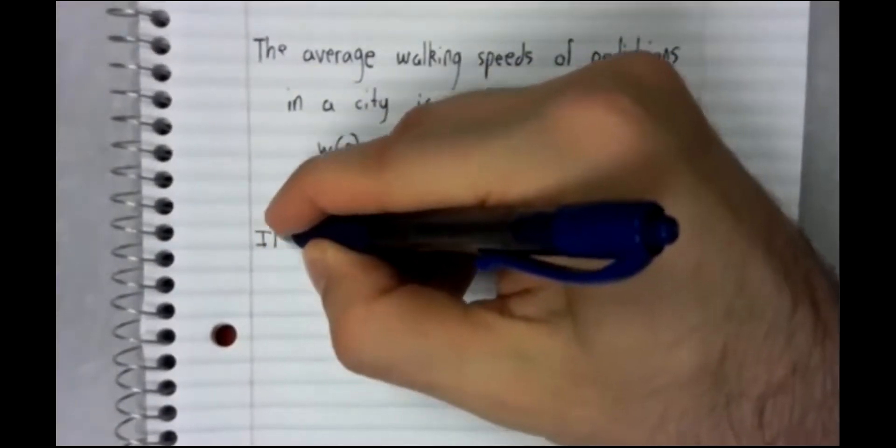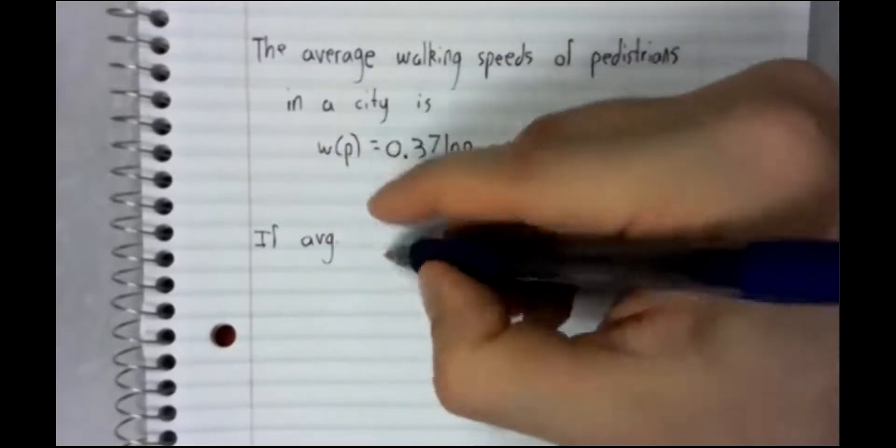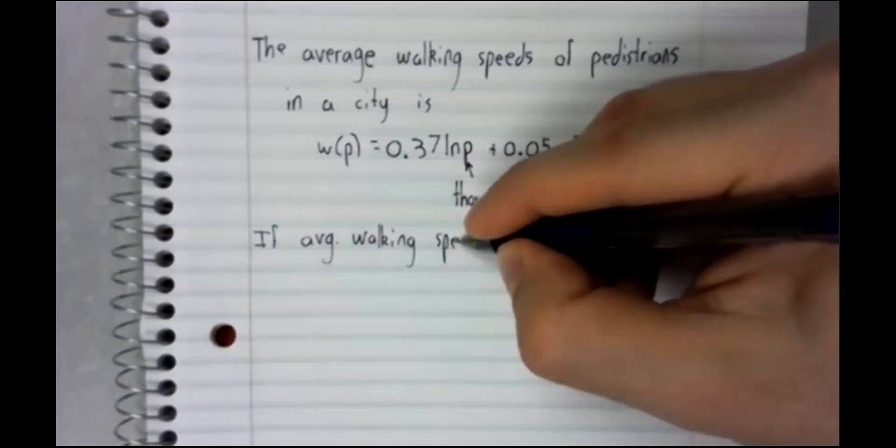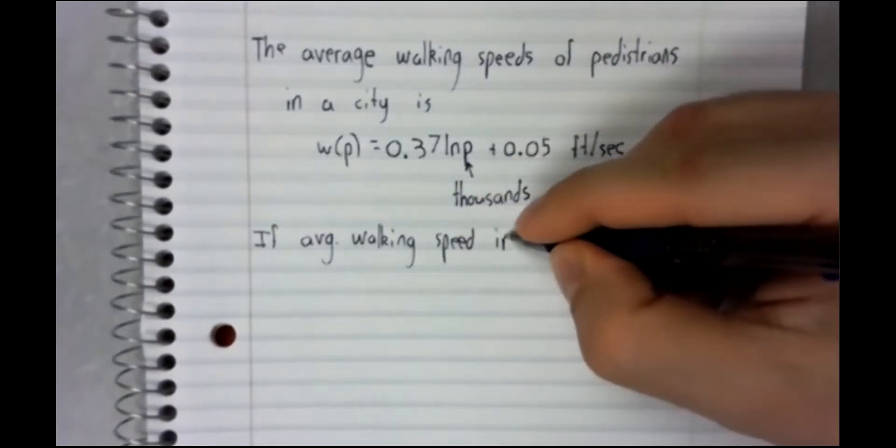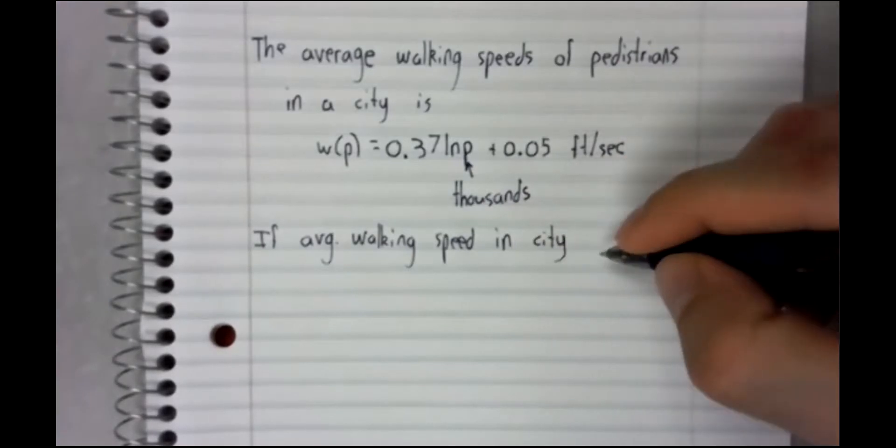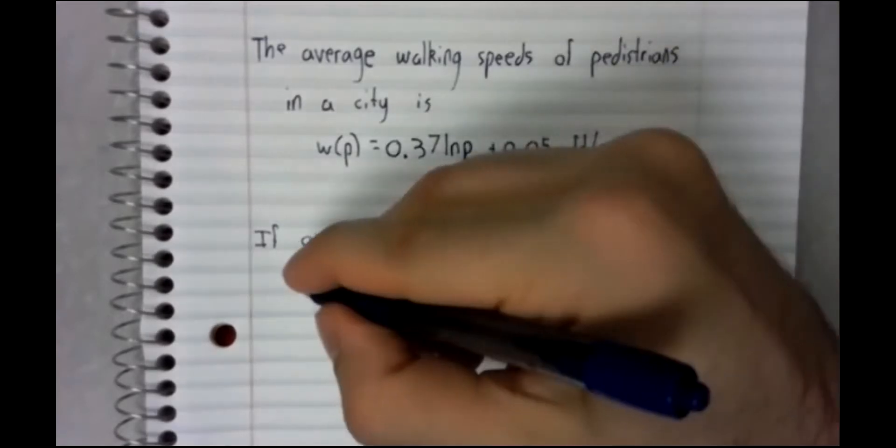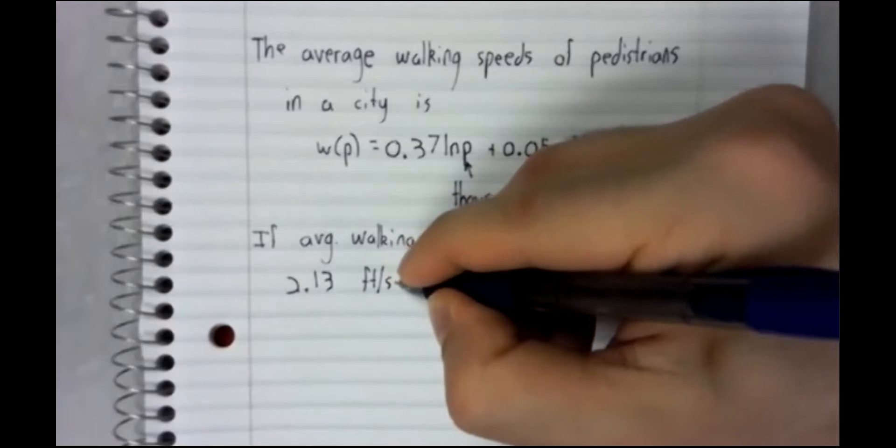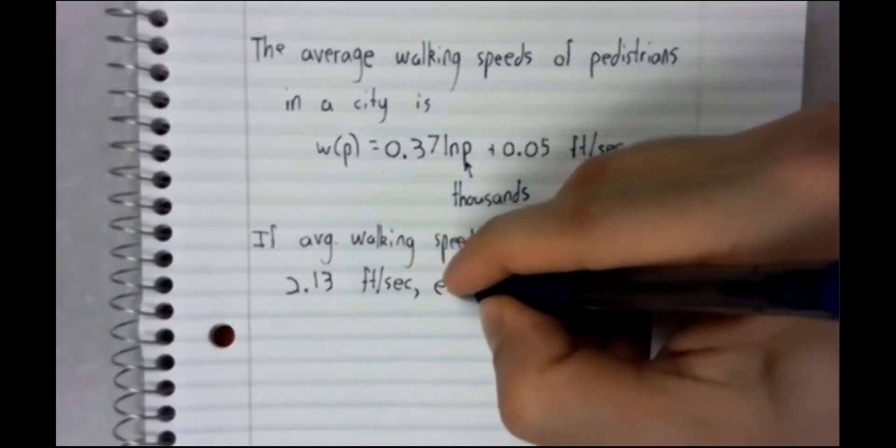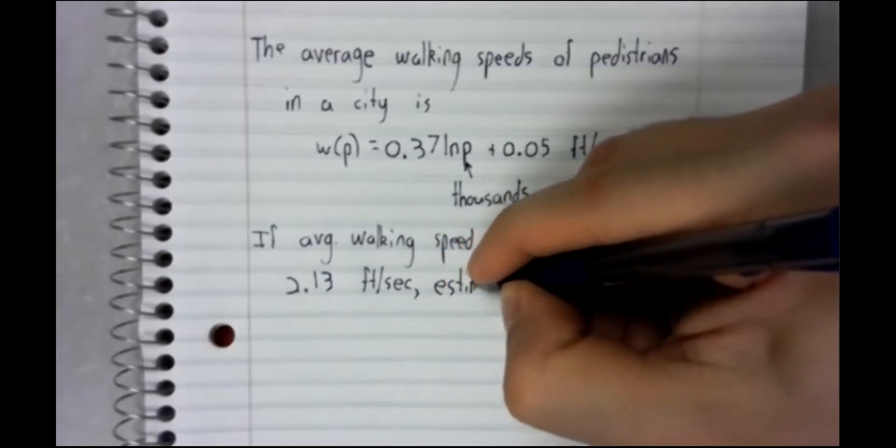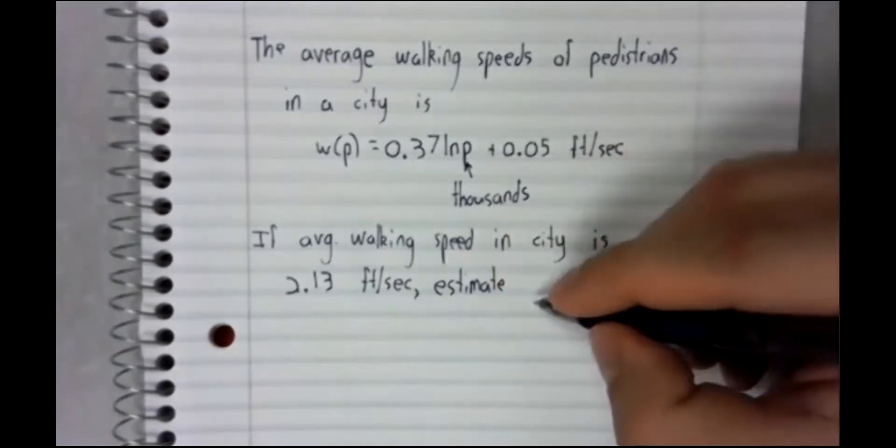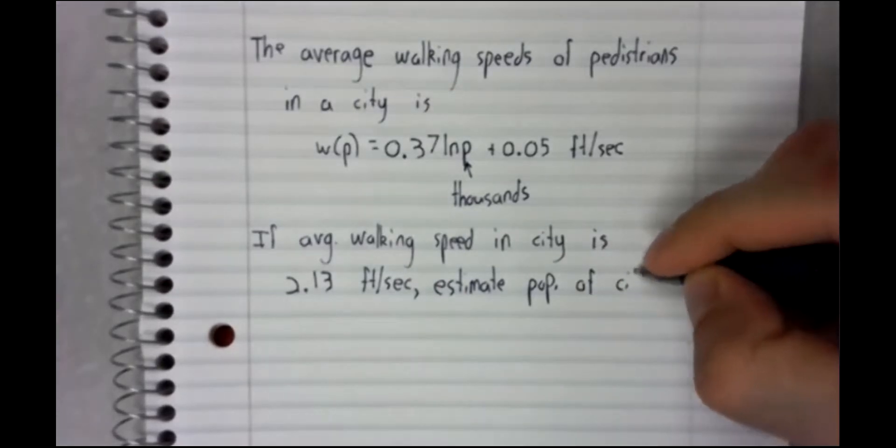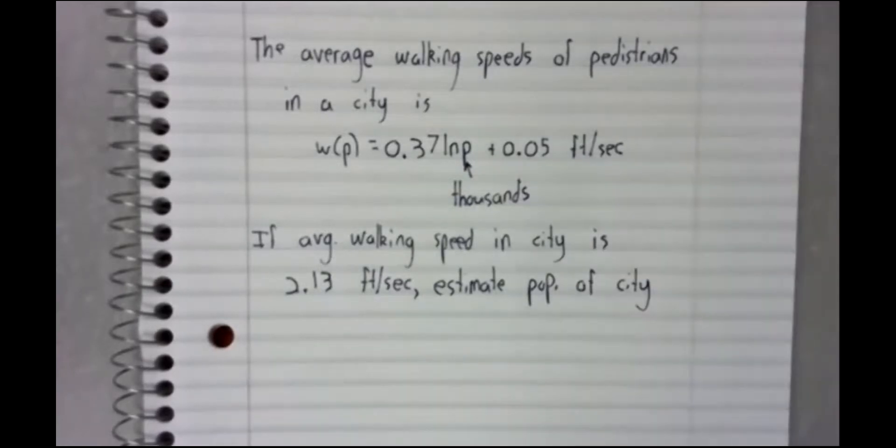So if the average walking speed of pedestrians in a city is 2.13 feet per second, let's estimate the population of this city.